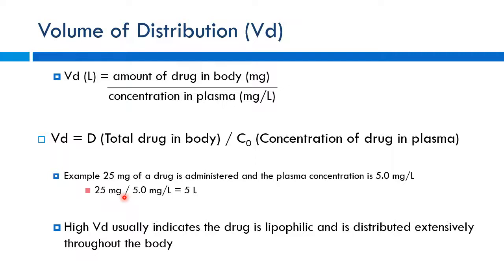THC, the active component in marijuana, is very lipophilic — which is also why it's used in edibles, since it partitions into butter and oils. Because of its high lipophilicity, THC loves being out in the tissues, especially adipose tissue. The question of how long someone stays positive on a urine drug screen for THC depends on chronicity of use, dose, and how much adipose tissue someone has. More adipose tissue means more storage for THC; as long as it's in tissue, it can leak back into the bloodstream and be detected in urine.